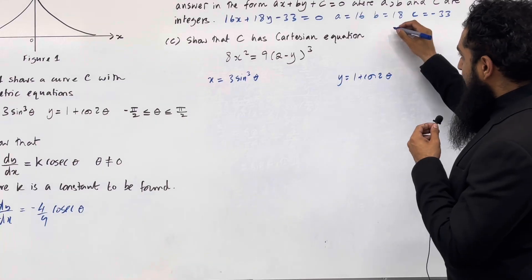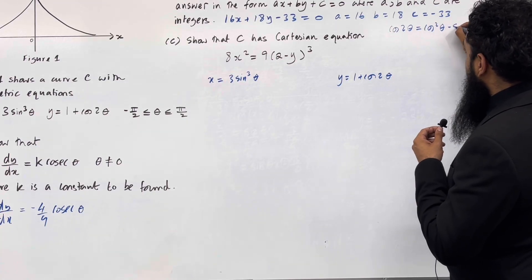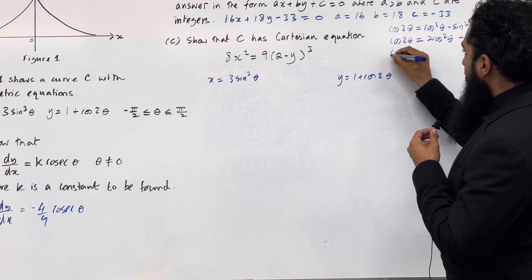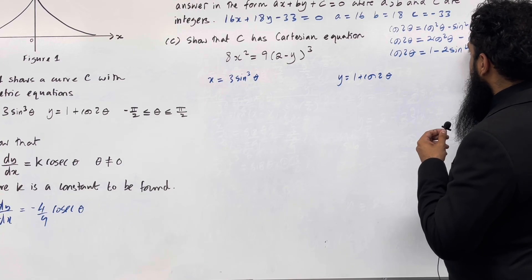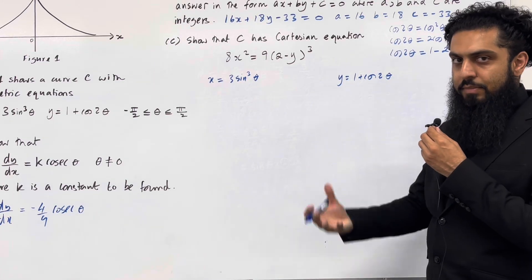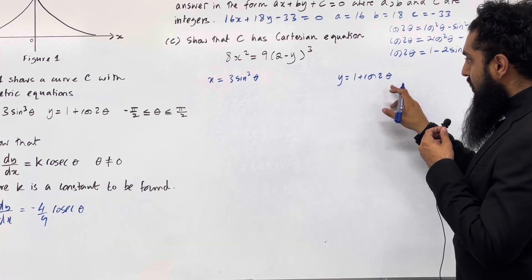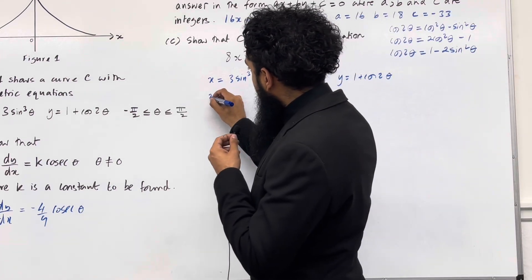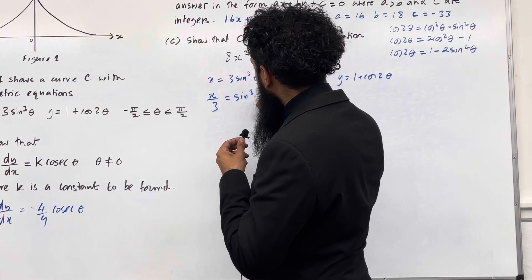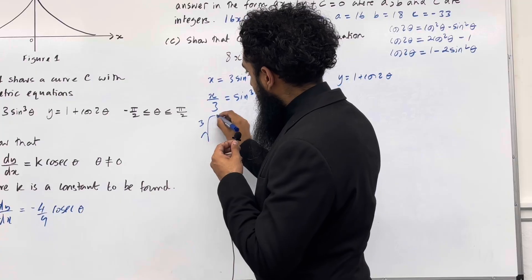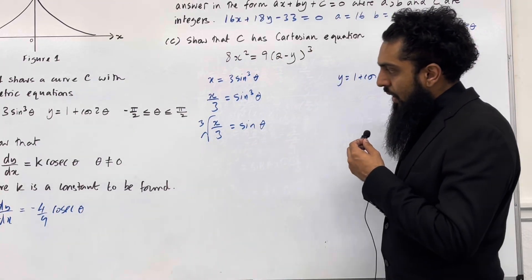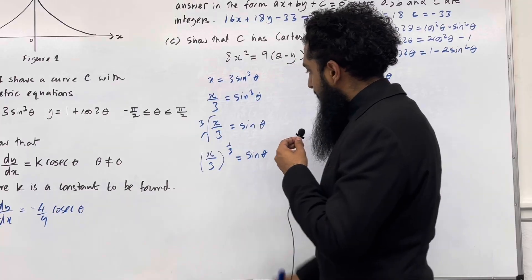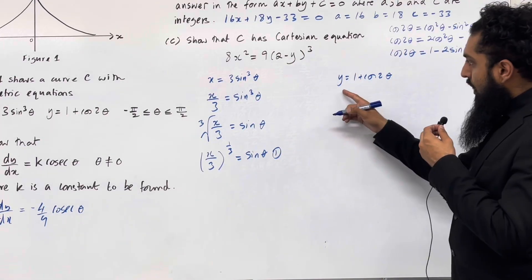Now cos 2 theta has three representations: cos squared theta minus sine squared theta; 2 cos squared theta minus 1; and 1 minus 2 sine squared theta. In the x parametric I will make sine theta the subject, so the representation I want for cos 2 theta is 1 minus 2 sine squared theta. From the x parametric: x over 3 equals sine cubed theta, so the cube root of x over 3 equals sine theta, which can be written as x over 3 raised to the power 1 third equals sine theta. Let's call this equation 1.